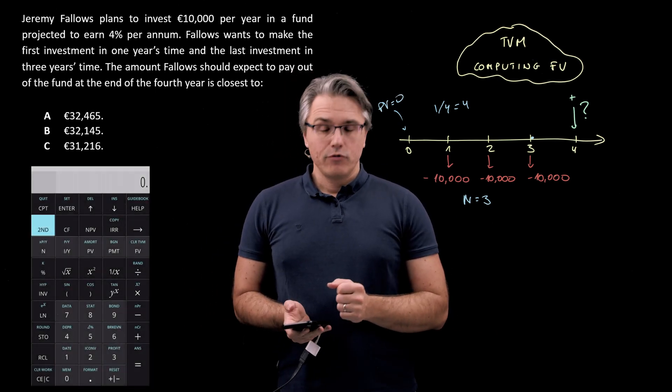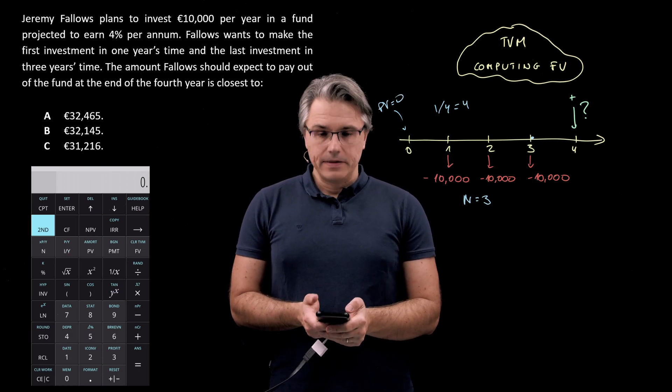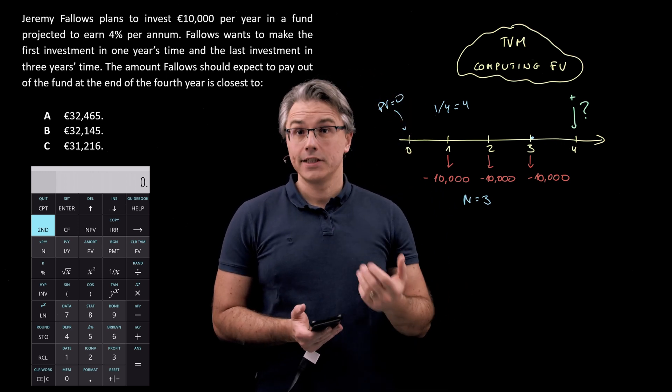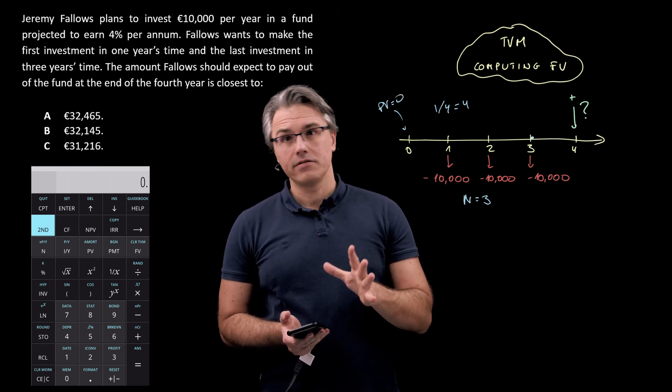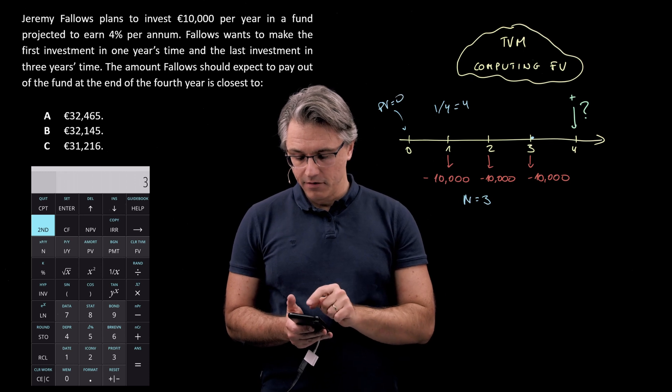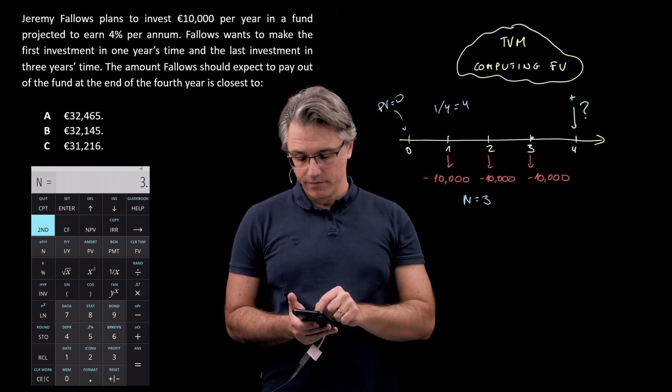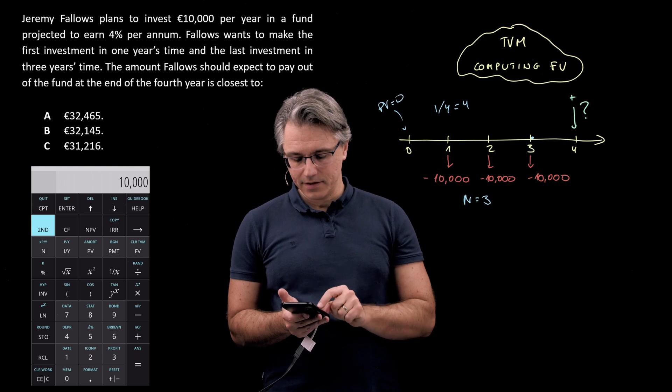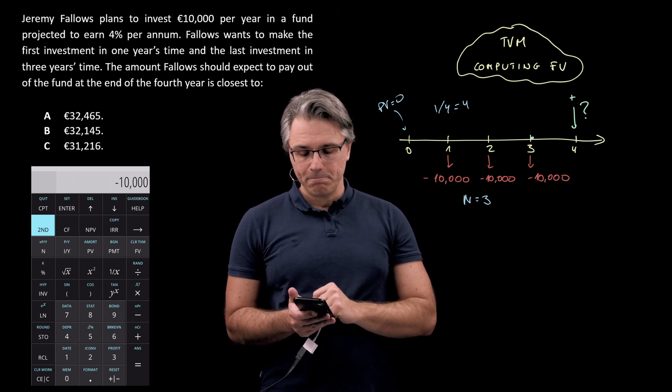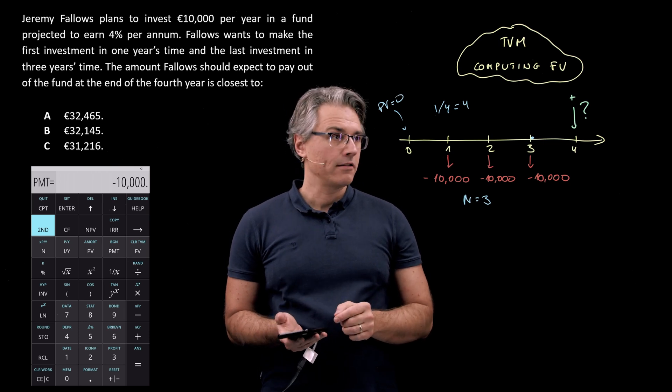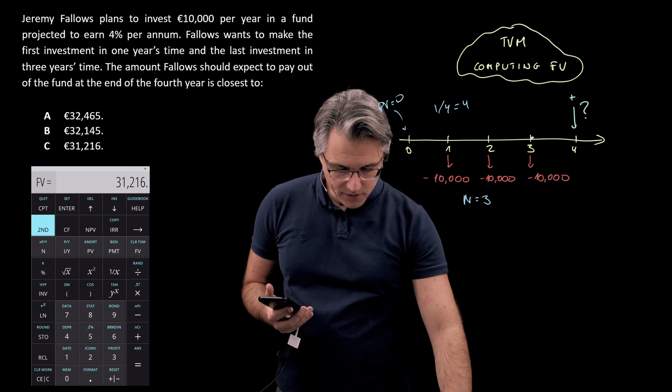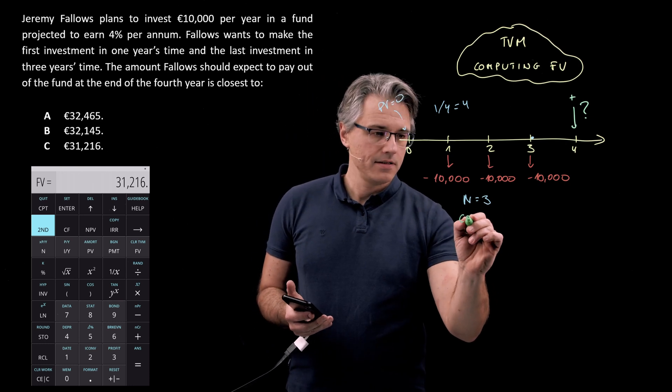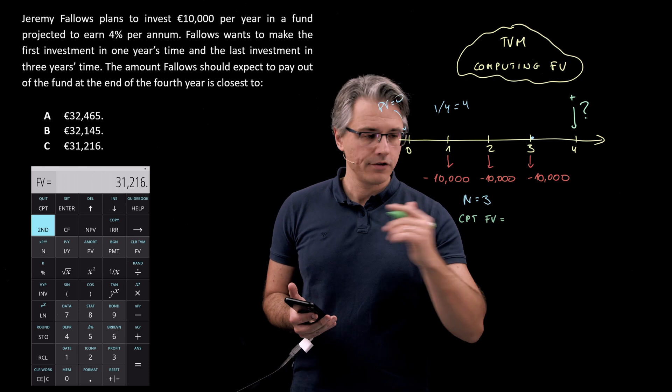Before we start using the TVM worksheet let's clear it, so that's second FV, good now we're ready. If I've cleared the worksheet I don't need to tell my calculator that PV is zero, zero is going to be the default figure anyway. So I'm going to have three for n, four as in four percent for i over y, I'm also going to have ten thousand but let's make this negative by pressing plus minus for the PMT and I'm asking the calculator to compute the FV so CPT FV. As you can see it's telling me that the relevant result is 31,216.